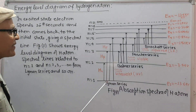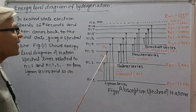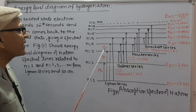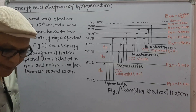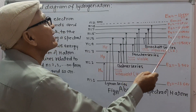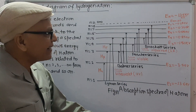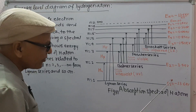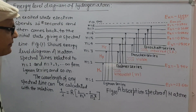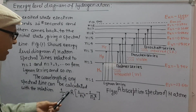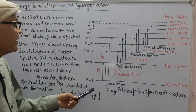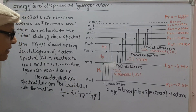The first spectral line of the Lyman series is denoted by H-alpha, the second by H-beta, and the third by H-gamma. These are the energies of different energy levels calculated from the relation En = −13.6 eV / n², corresponding to n = 1, 2, 3, and so on. We can find the wavelength of any spectral line using the Rydberg relation, where R is the Rydberg constant. For example, putting n1 = 1 and n2 = 2, we get the wavelength of the H-alpha line of the Lyman series.